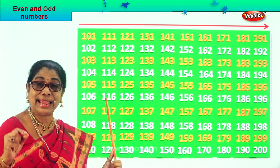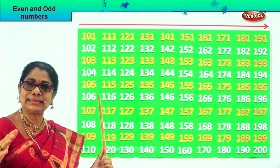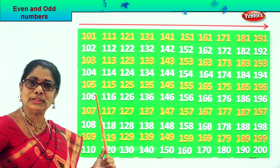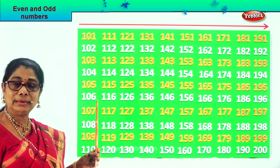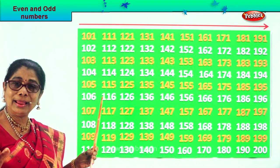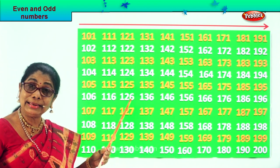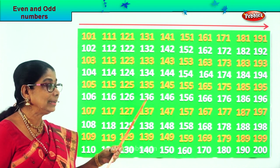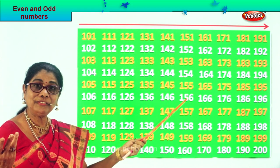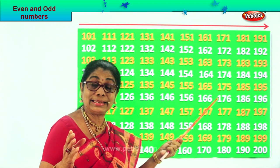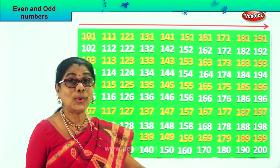Now all numbers ending in 6: 6, 16, 26, 36, 46 and so on. Here, identifying even numbers from 100: 106, next 116, next 126, 136, 146, 156, 166, 176, 186, 196.